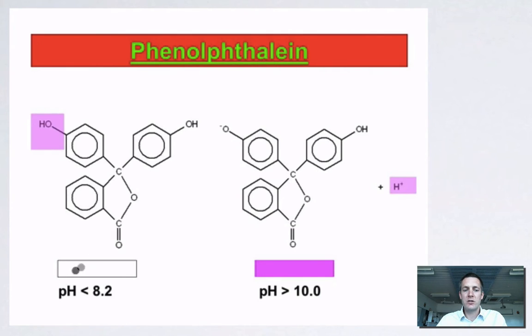In pHs of less than 8.2, in the acidic range, it is colorless or white. When the pH gets above 10 it turns purple. In between these two it's kind of a mixture of the two. So it's changing from colorless to purple.